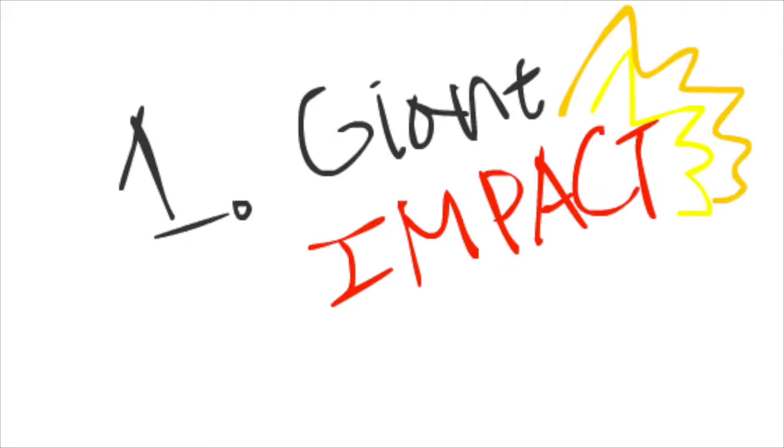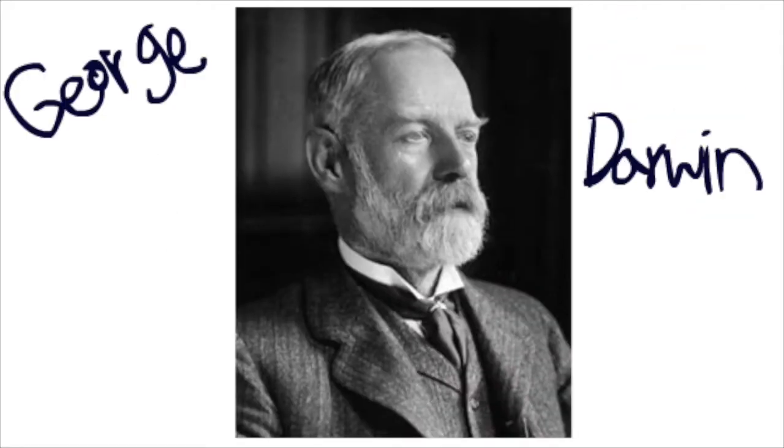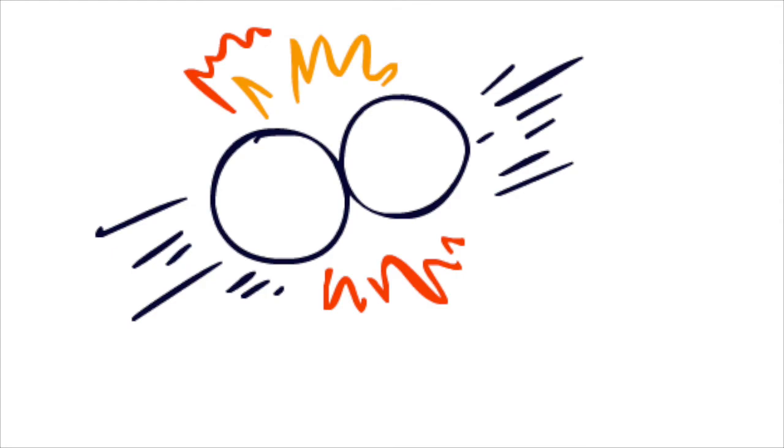The first hypothesis is the giant impact theory. It was first suggested in 1898 by George Darwin, the son of Charles Darwin. This is the most prevailing theory supported by the scientific community. According to this theory, the moon was created by a collision.